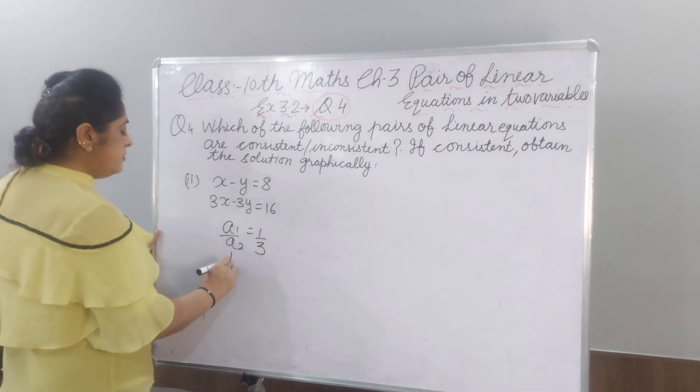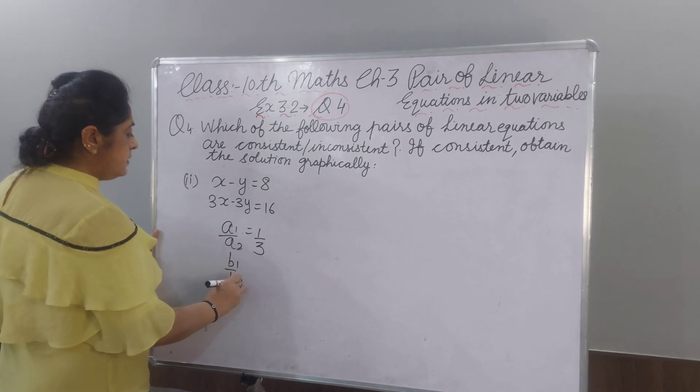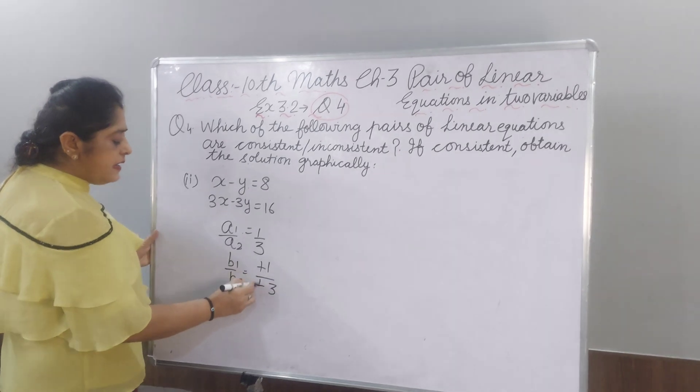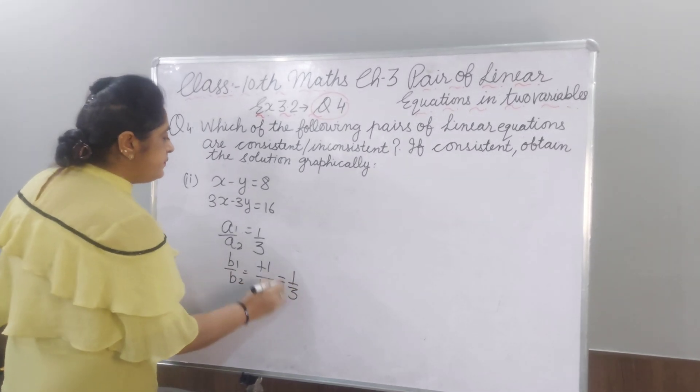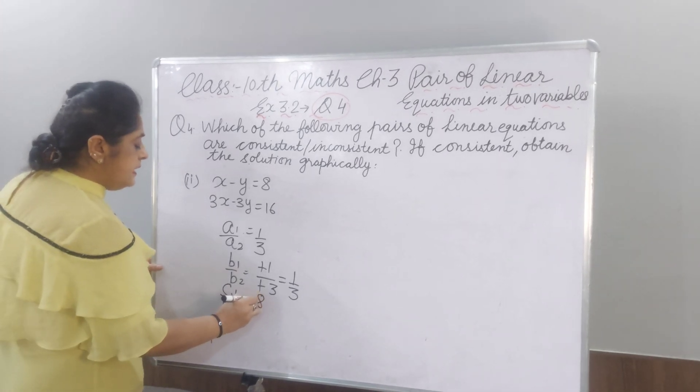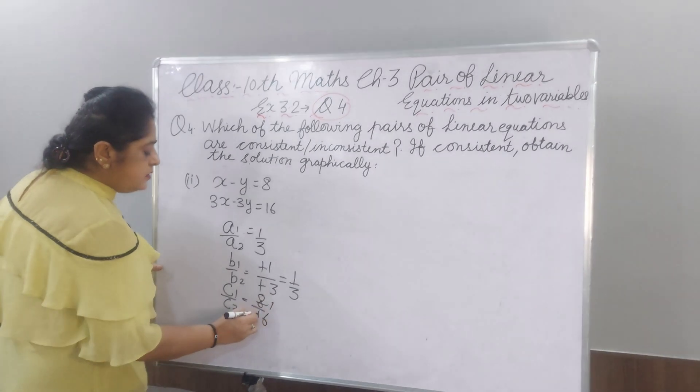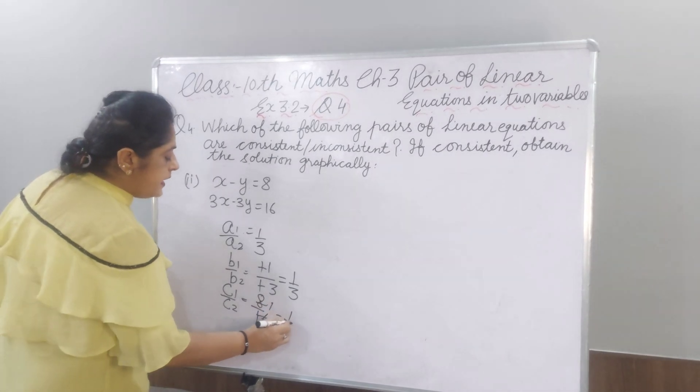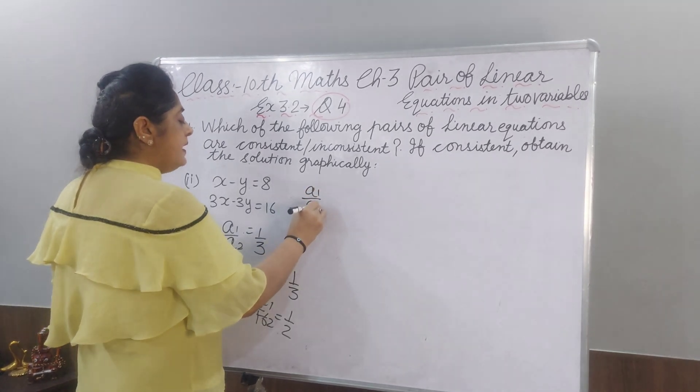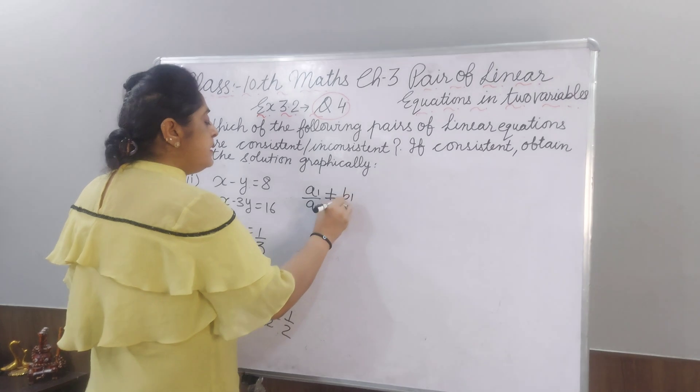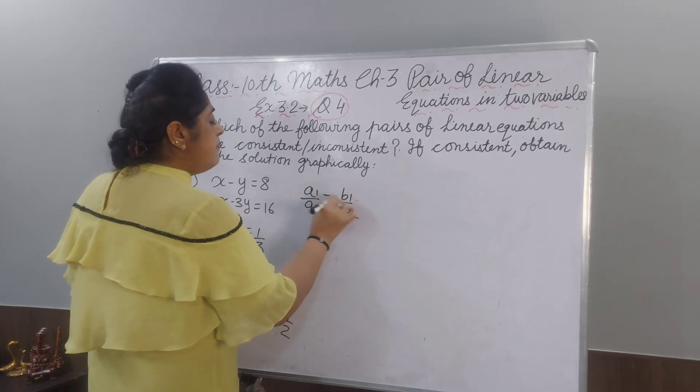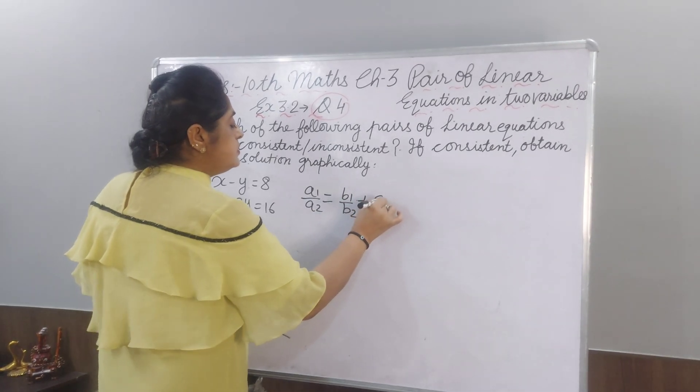Now, B1, B2 minus 1 divide by minus 3. Minus and minus will be cancelled. You will get 1 by 3. Now, C1 by C2, that is 8 by 16. 8 to the 16, you can reduce the term. You will get 1 by 2. Here, observe A1 by A2 is equal to B1 by B2.